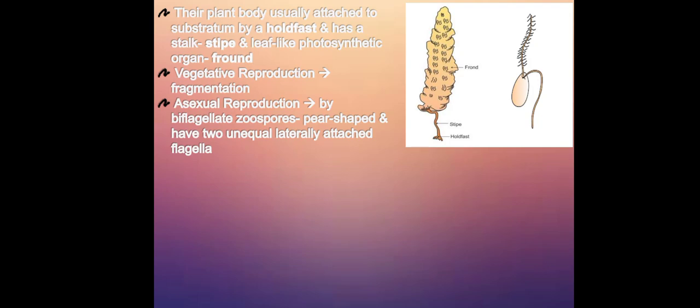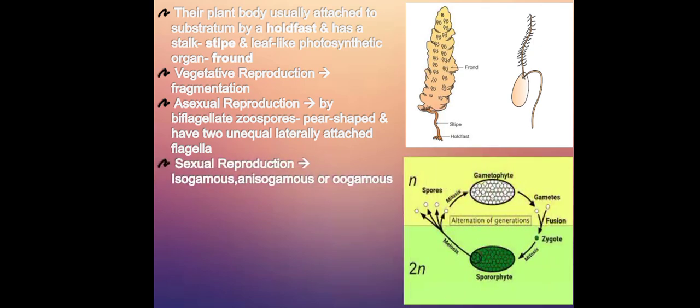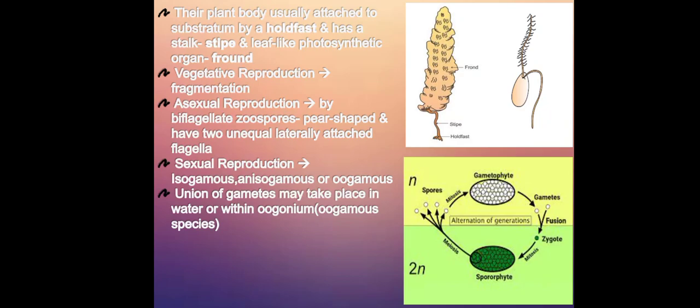Asexual reproduction by biflagellate spores, that is zoospores, which are pear-shaped and have two unequilaterally attached flagella, or sexual reproduction by isogamous, anisogamous, or oogamous types. Union of gametes may take place in water or within oogonium.